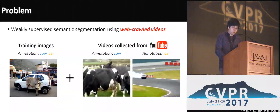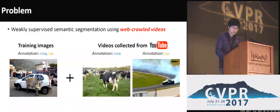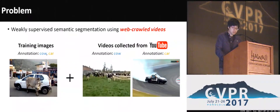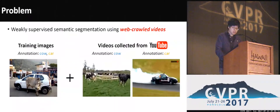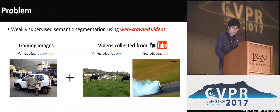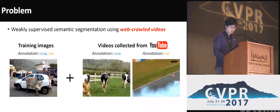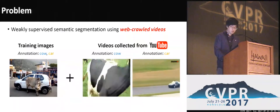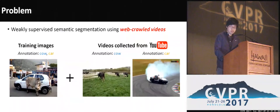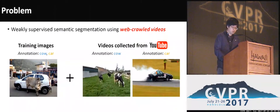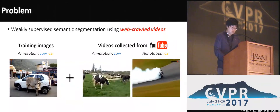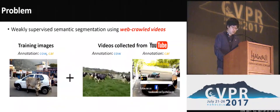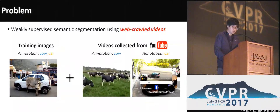In addition to weakly labeled images with image-level class labels, our approach exploits web videos to simulate segmentation masks missing in weakly labeled images. Inferring object masks in video is much easier than in images, since motion in video provides a critical cue to distinguish the target object from the background. In addition, such videos can be obtained automatically by searching YouTube using class labels as search keywords.